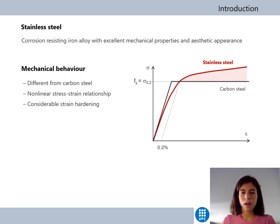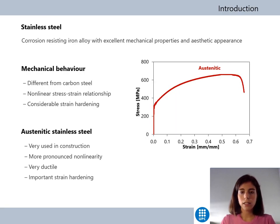Stainless steel is a corrosion resistant alloy with excellent mechanical properties, appearance and residual value. The mechanical behavior of stainless steel is considerably different from carbon steel. Carbon steel shows a clear linear behavior up to the yield stress, while stainless steel exhibits a nonlinear stress-strain behavior even for low strain values and is characterized by high ductility and considerable strain hardening.